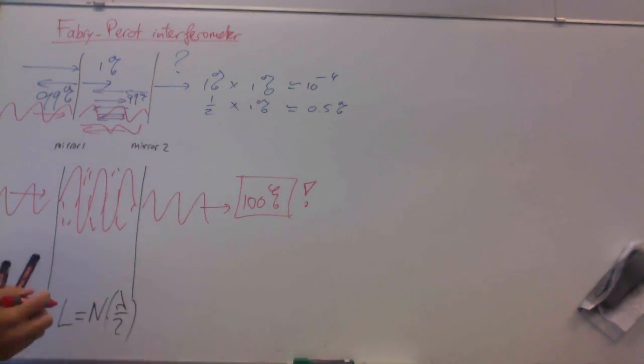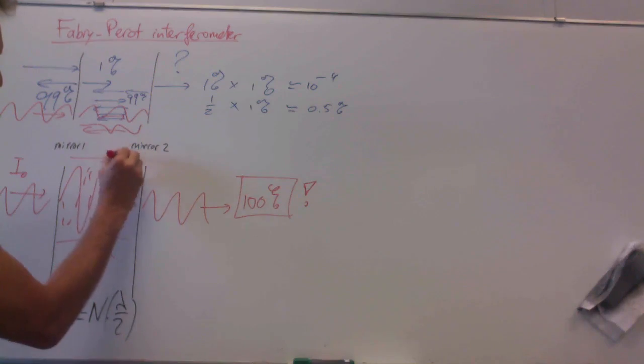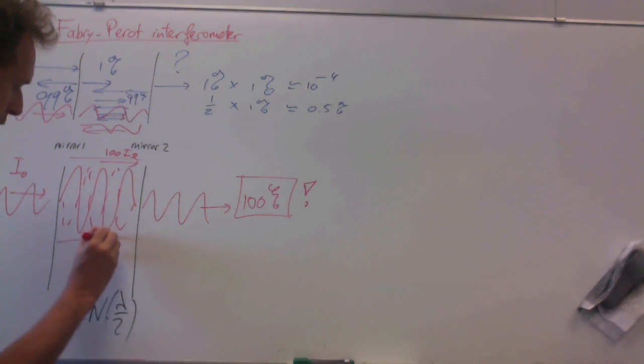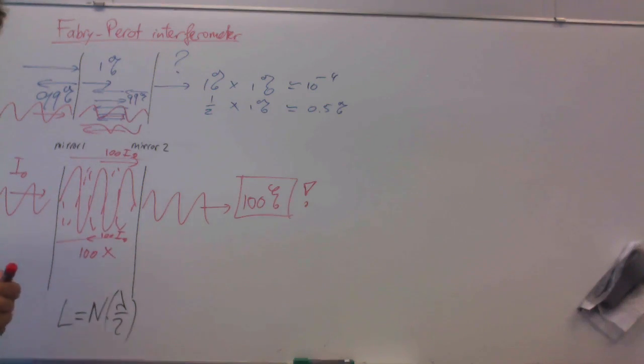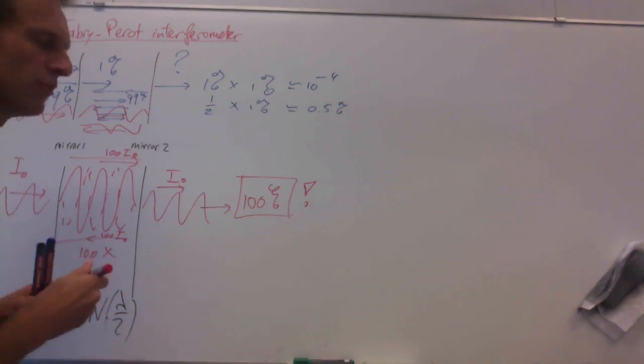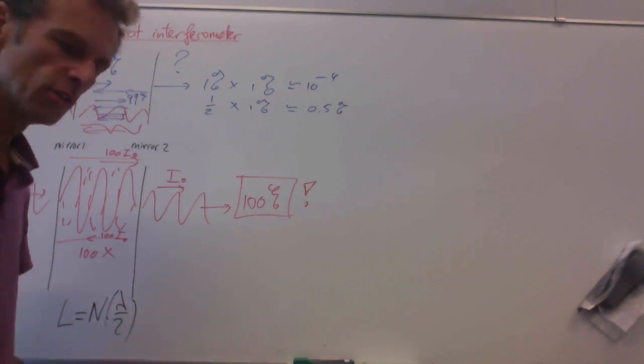No light gets reflected, and actually internally in this cavity, the intensity is 100 times larger than the incident intensity. If the incident intensity is I0, then internally you have 100 I0 propagating to the right, and actually also 100 I0 propagating to the left, so that what gets transmitted through the final mirror is only I0. That's the magic of interference.